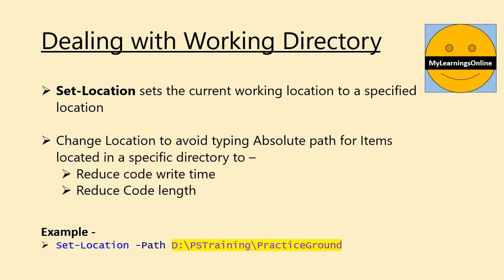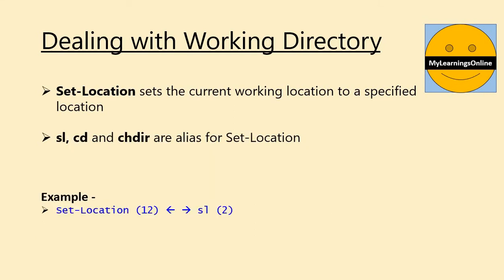In such cases, setting the current location to the location of files and folders that we are working with may always be helpful and efficient. Set-Location command sets the current working location to a specified location or directory. In this example, we are trying to set the current working directory as marked in yellow. Sl, cd, and chdir are aliases for this command. We can use any of them as per our convenience. The command has 12 characters, but its alias has only 2 characters.